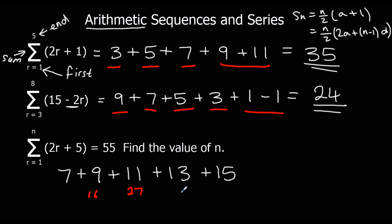Continuing: twenty-seven, forty, forty-five — wait, that's going to be the running totals. So we get seven, nine, eleven, thirteen, fifteen — counting the terms: one, two, three, four, five. So n equals five.